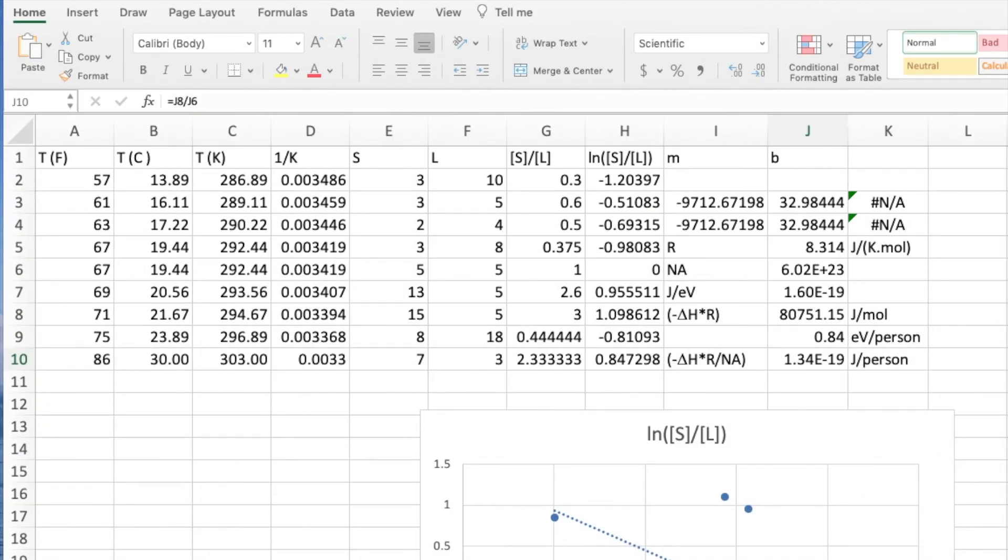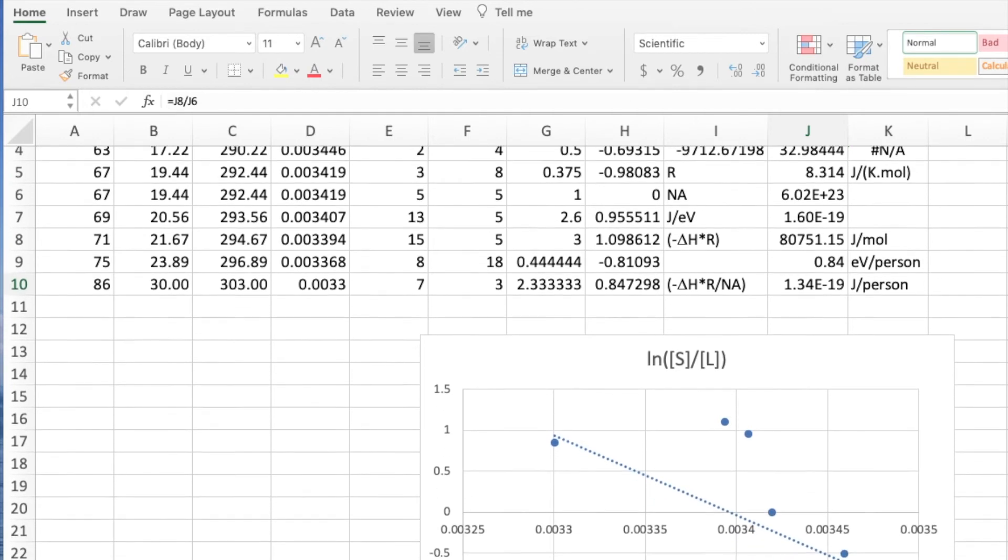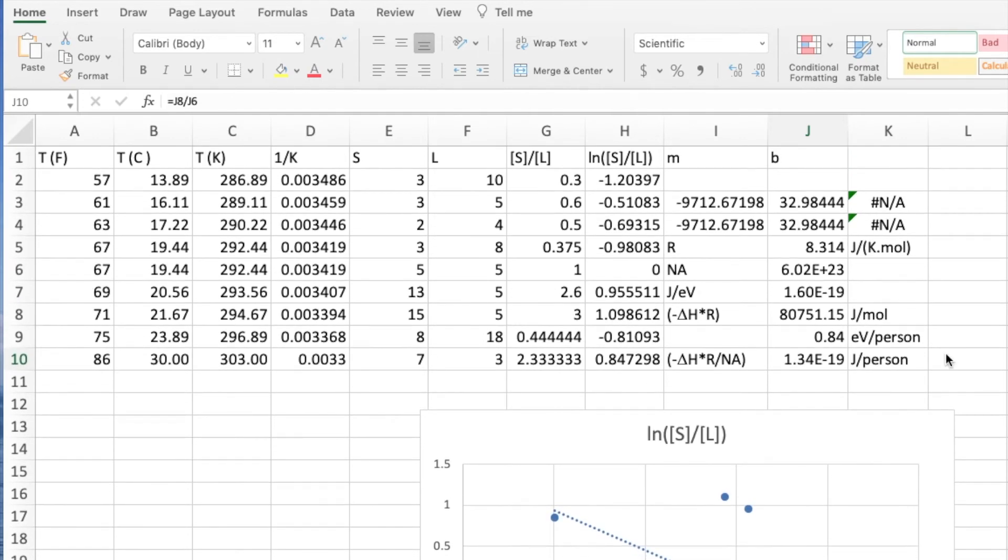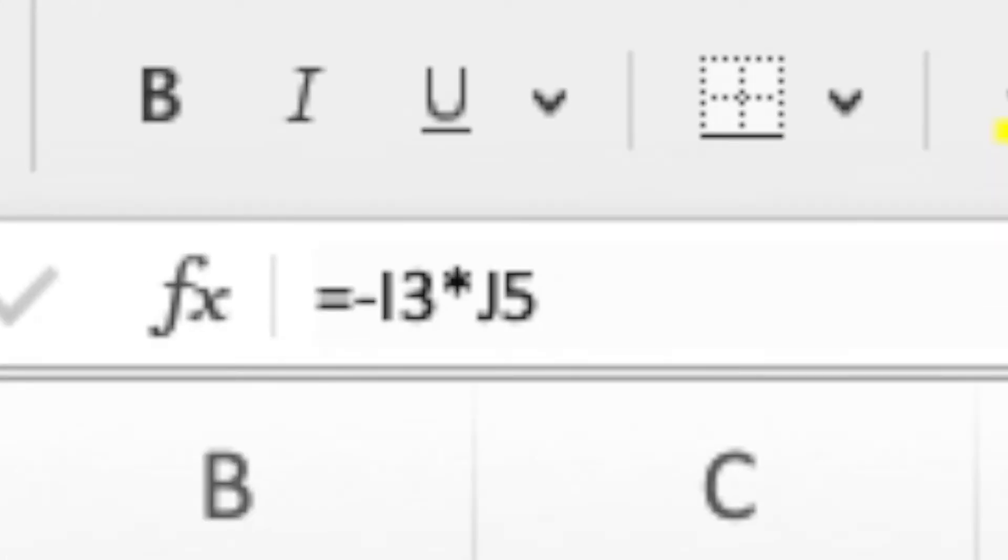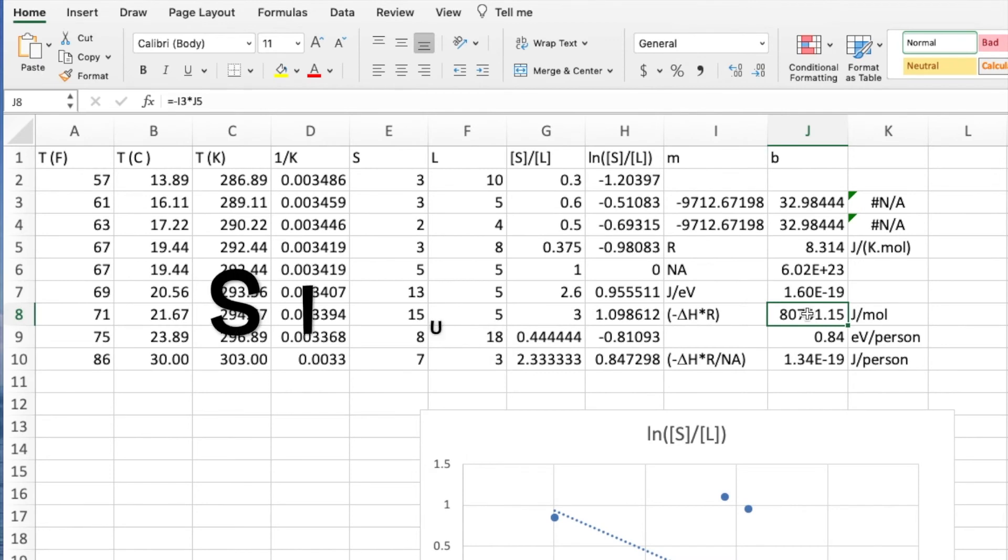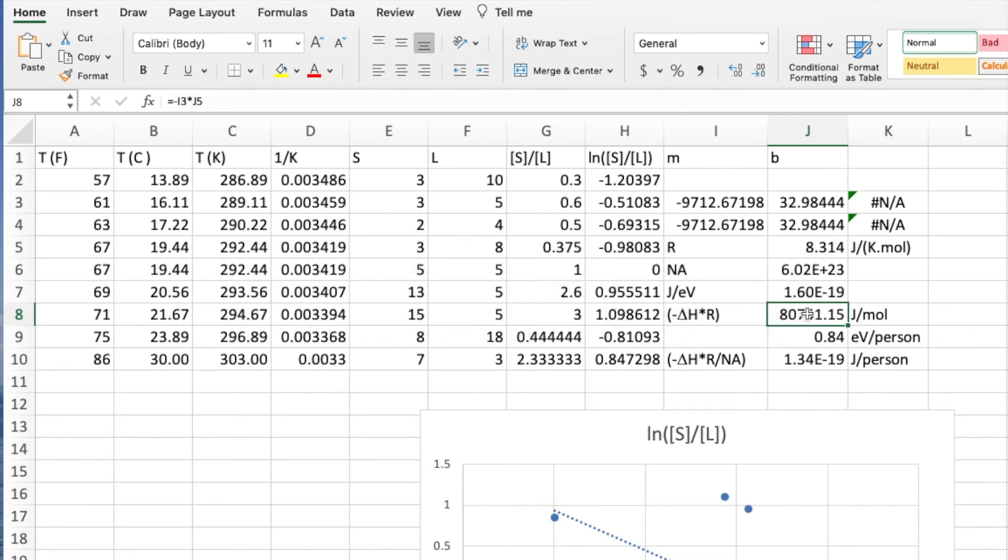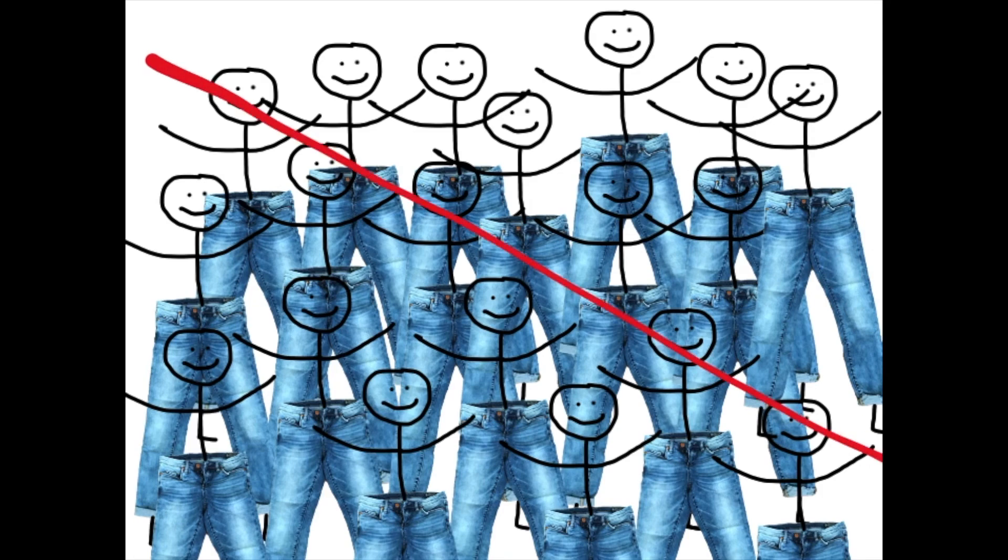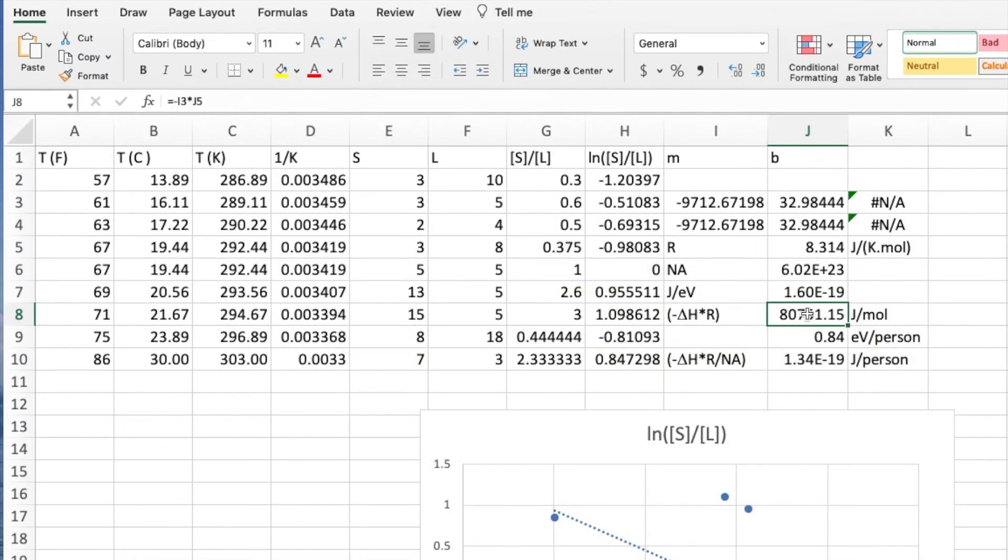Now that you are back, here are the results. Multiplying the slope by minus the gas law constant yields the enthalpy change. That's done in cell j8 here. I suggest that you use SI units. This result is in joules per mole. That's silly. Nobody deals with humans in molar quantities. Dividing by Avogadro's number produces the result in joules per person. That's done in j10 here.